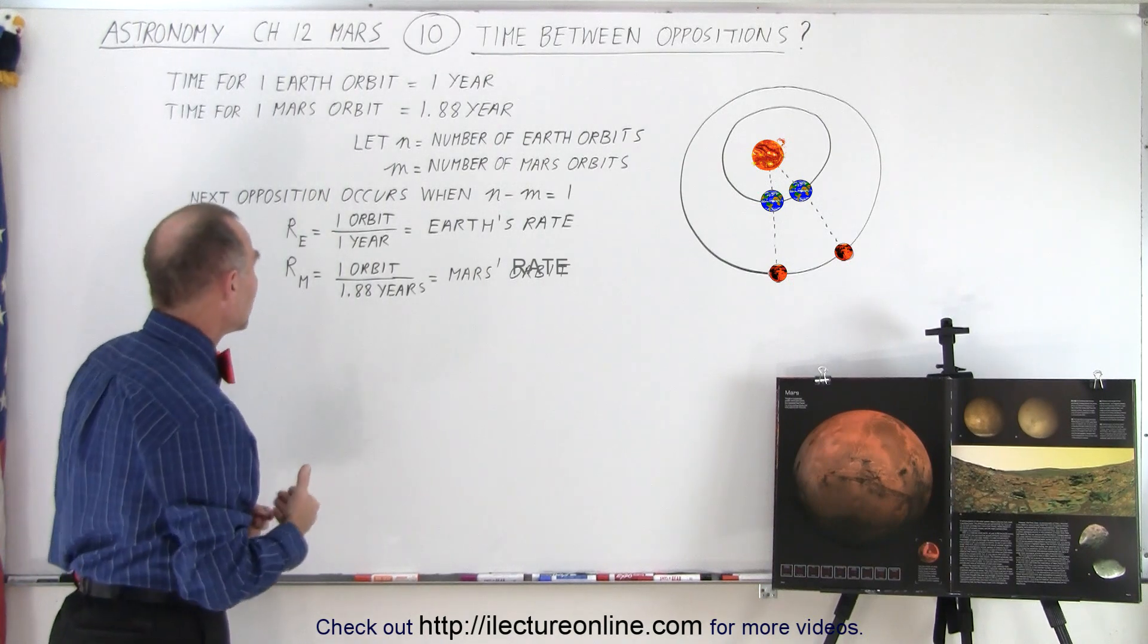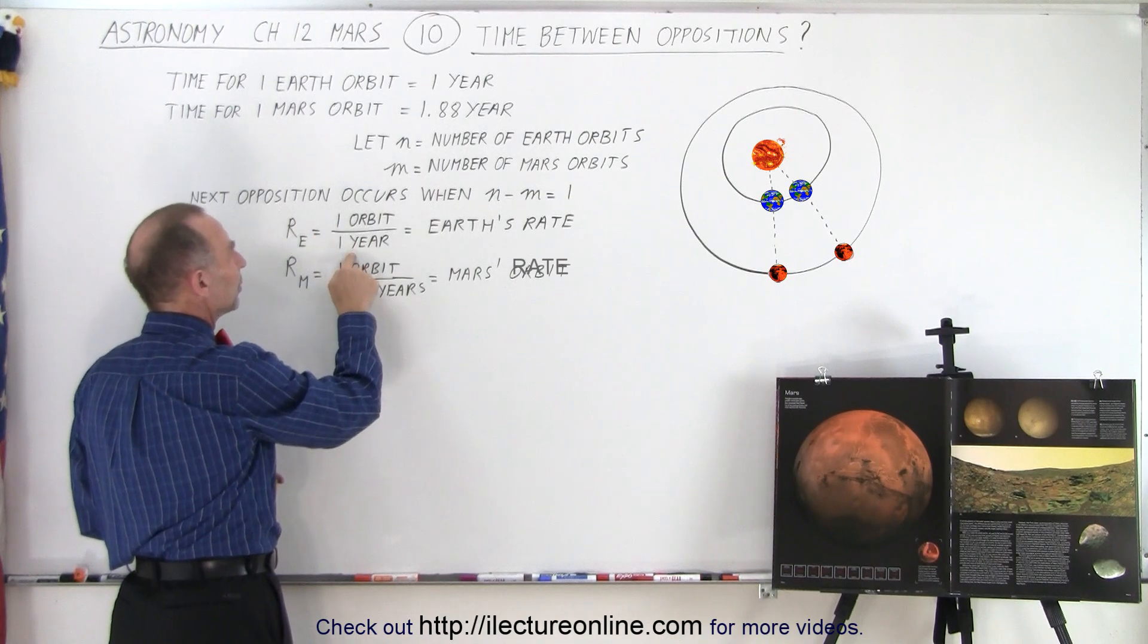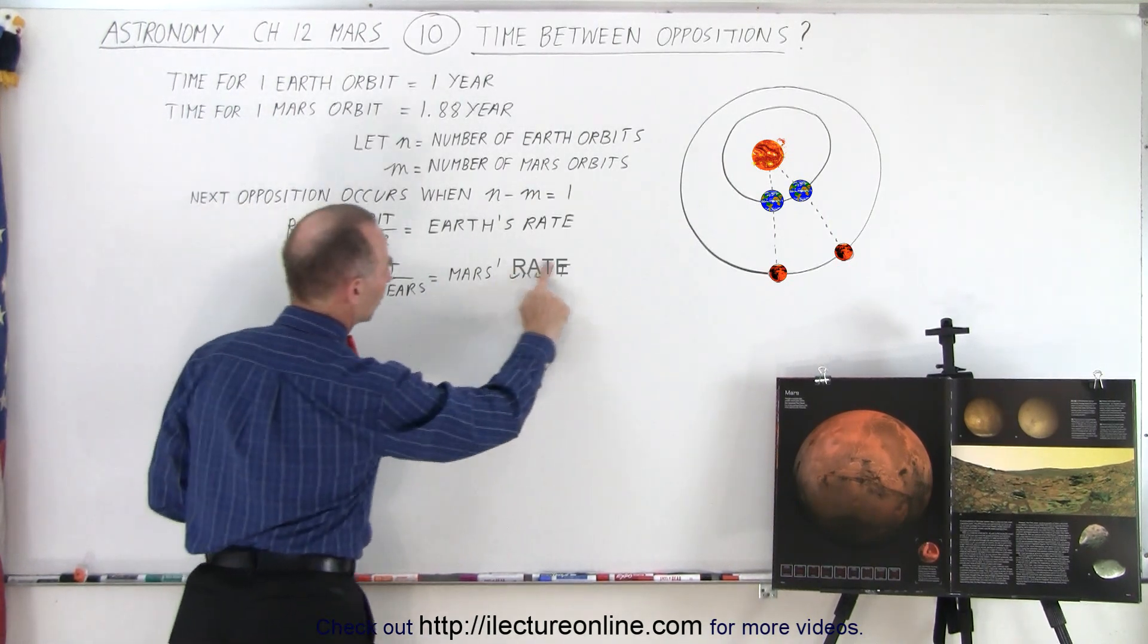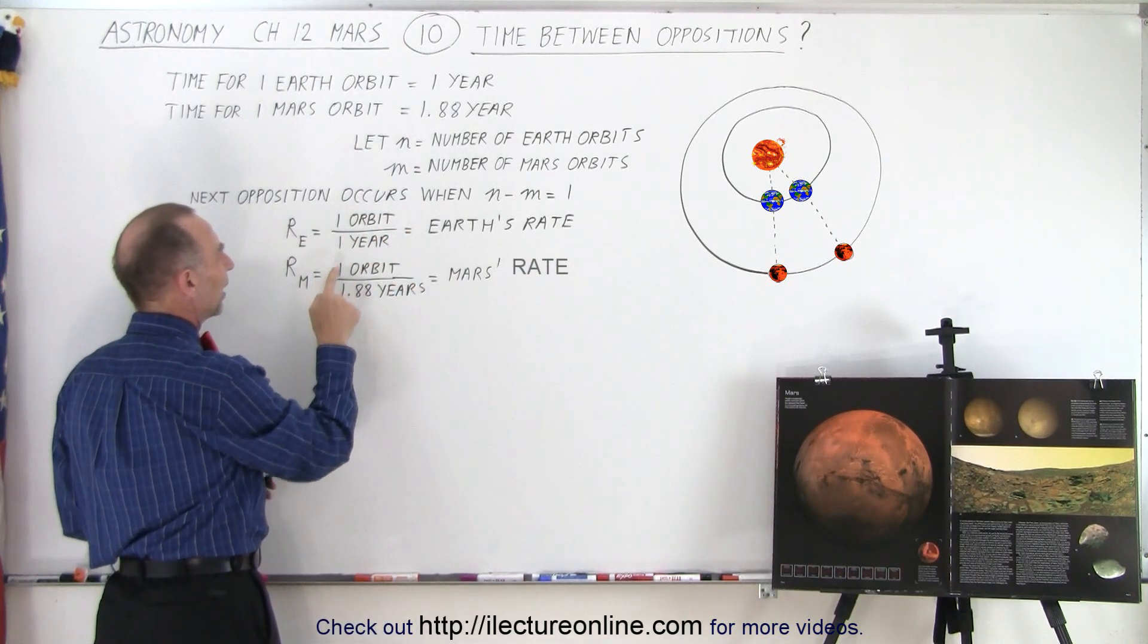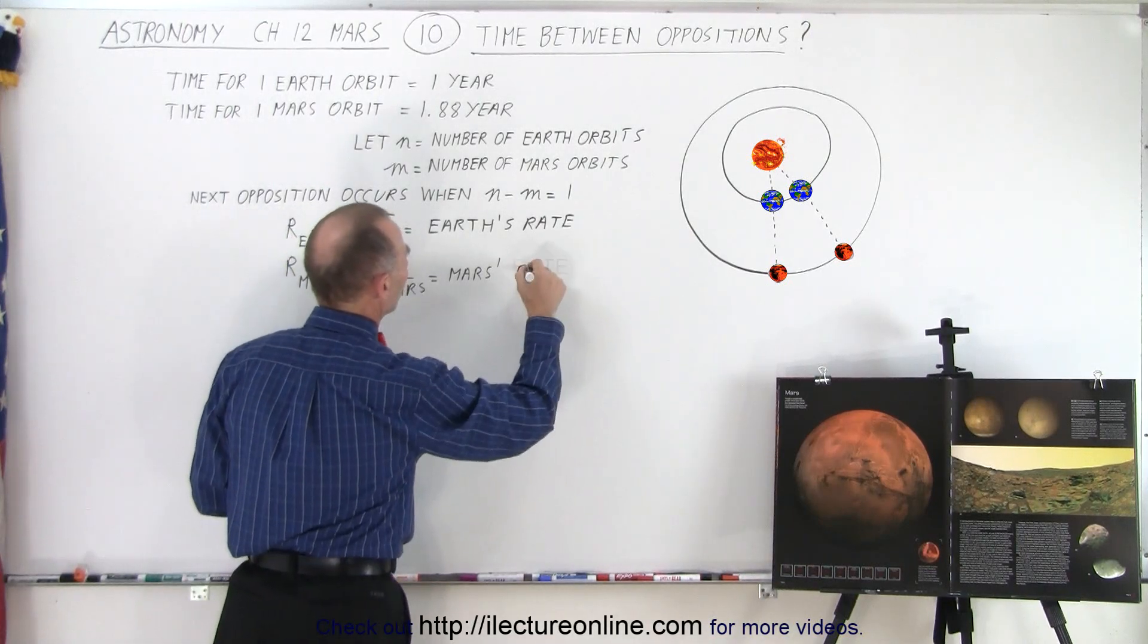we're going to need the rate of each planet. So the rate of the Earth is one orbit per year, which is called the Earth's rate. And then r sub m is one orbit for every 1.88 years, which is then known as Mars' rate.